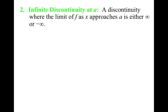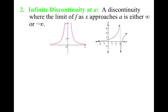The second type of discontinuity is infinite discontinuity — where the limit of f as x approaches a is either infinity or negative infinity. Basically, you have a vertical asymptote. It makes sense that a function cannot be continuous when you have a vertical asymptote. One example has both sides going to positive infinity even though f of a exists, and another has them going in opposite directions where f of a does not exist.